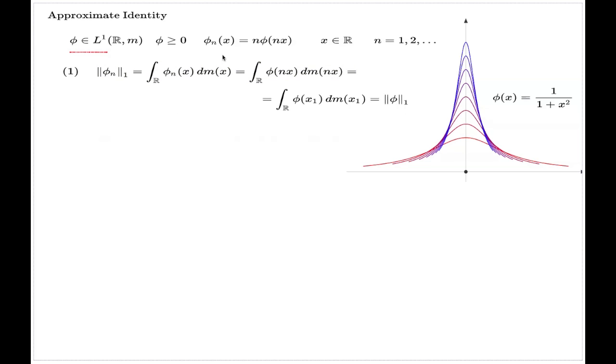In fact, what is missing is the requirement that this value is in fact 1. This is a requirement for the sequence to be called the approximate identity. So, in fact, the sequence is called the approximate identity when it is built like this, and on top of that you require that the integral of the function φ is 1.